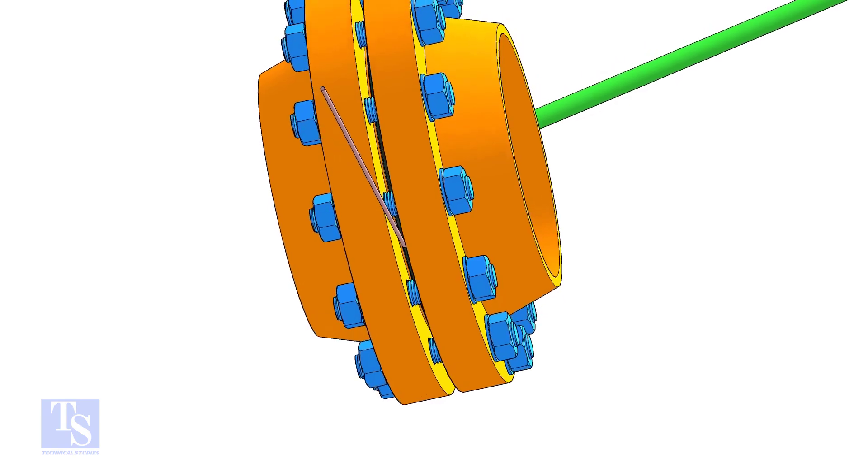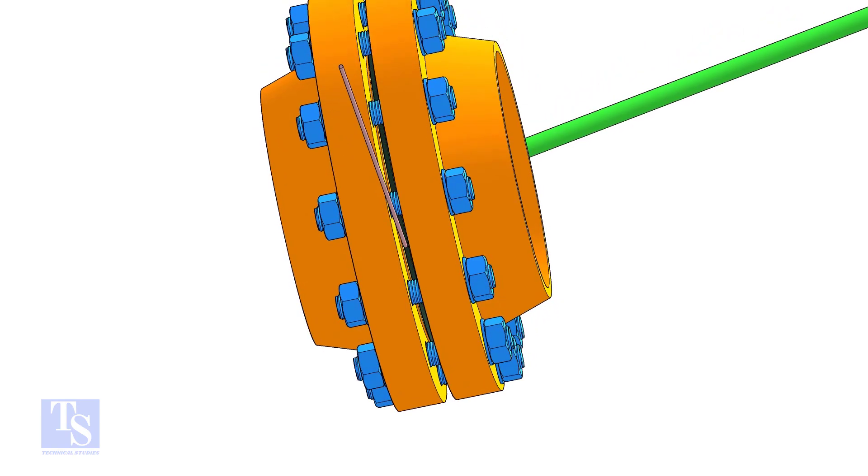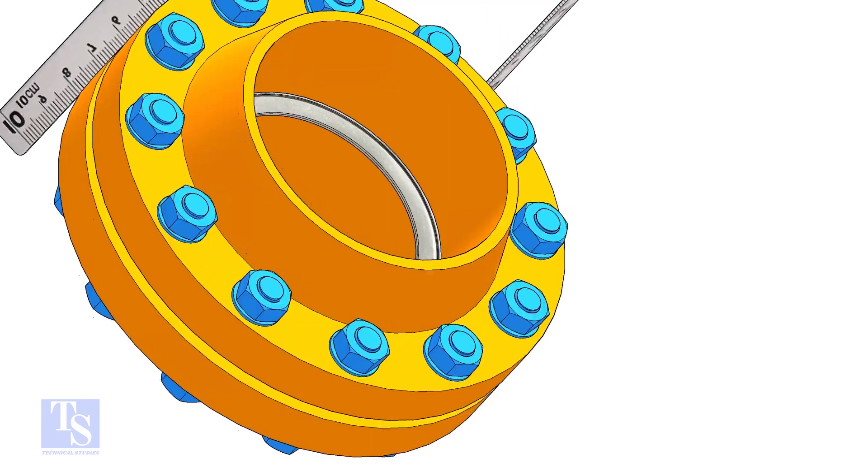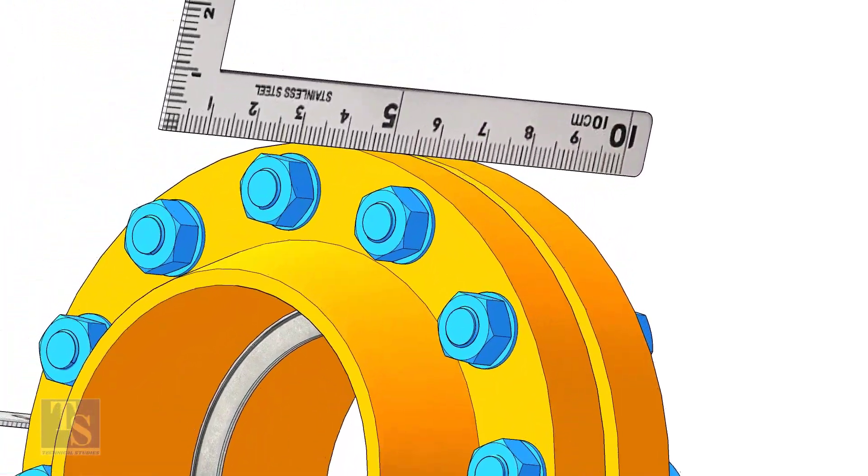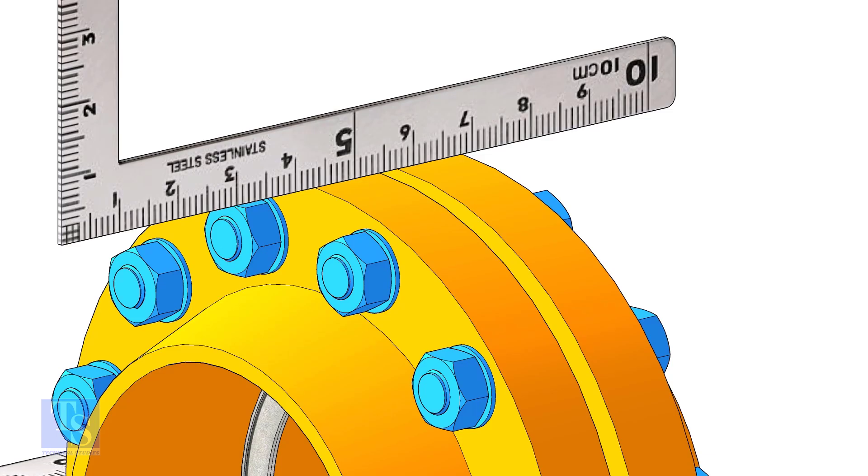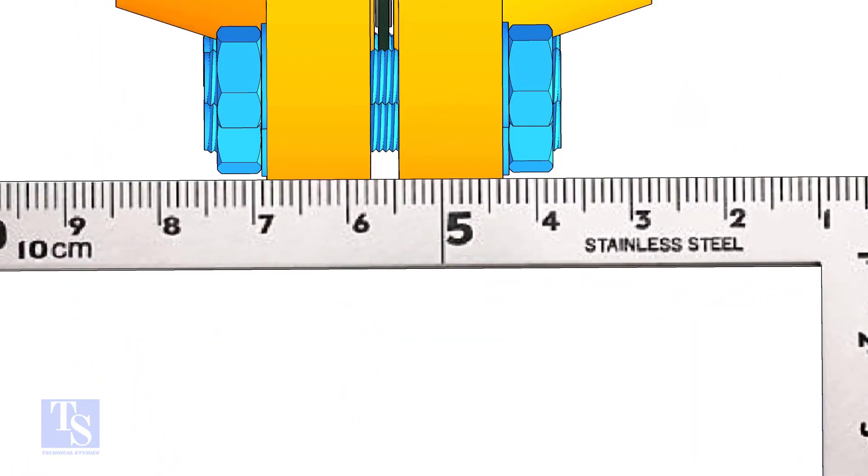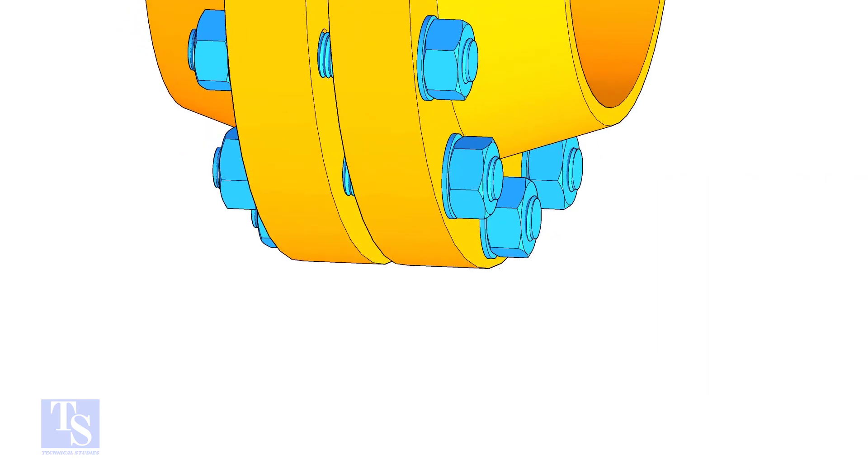Now tighten the bolts only enough to hold the gasket in its correct location. Check the flange overlap minimum at four quarters. In case there is an overlap, distribute equally to all sides.